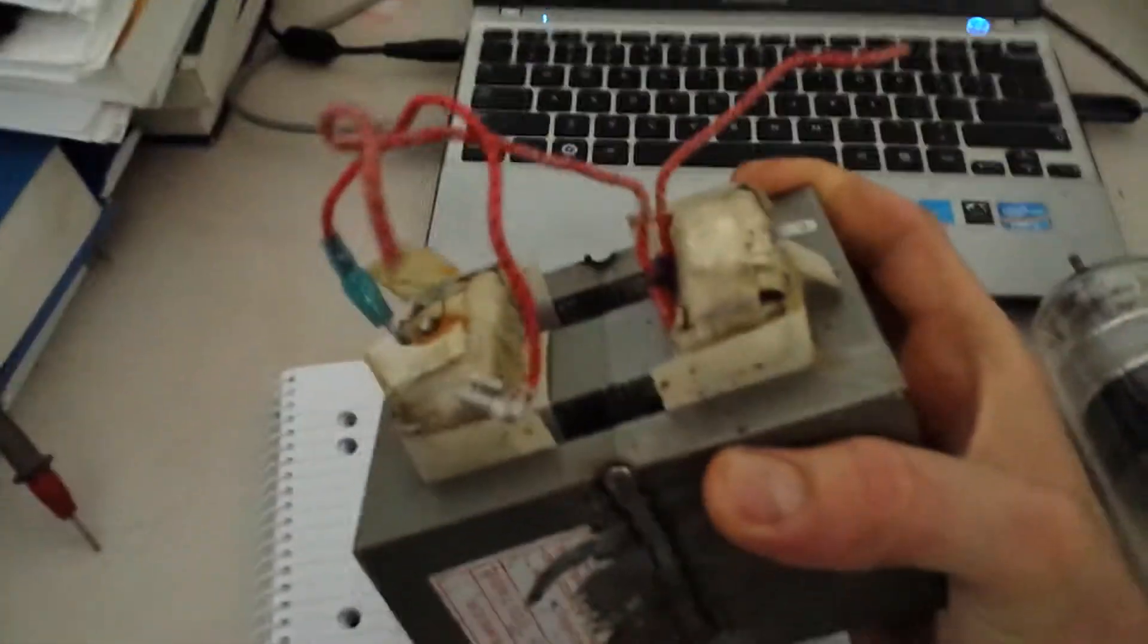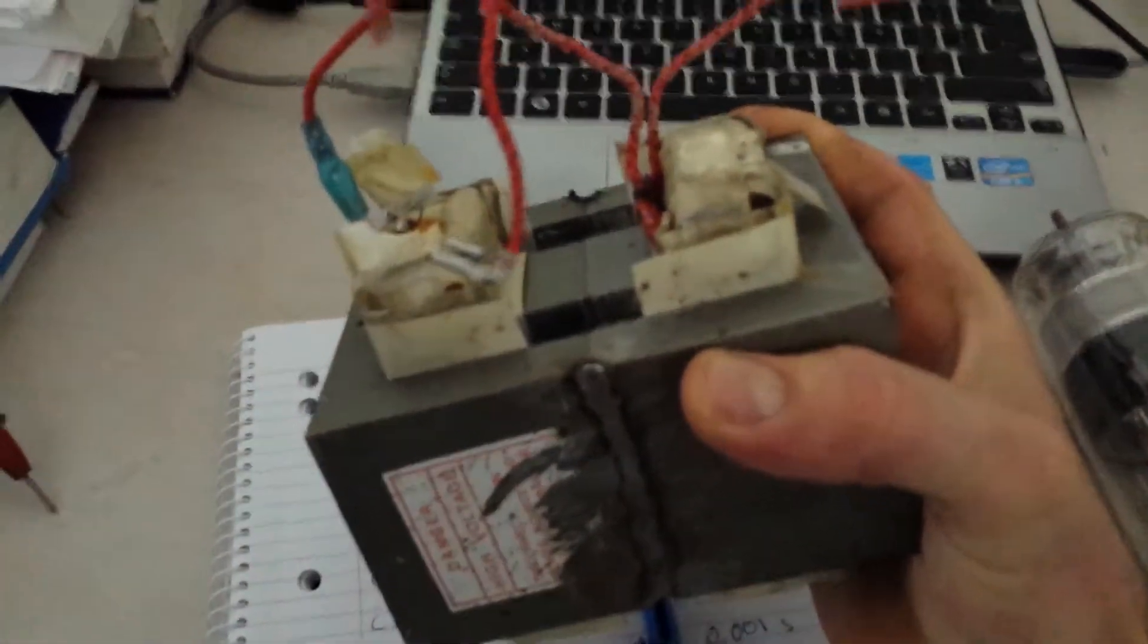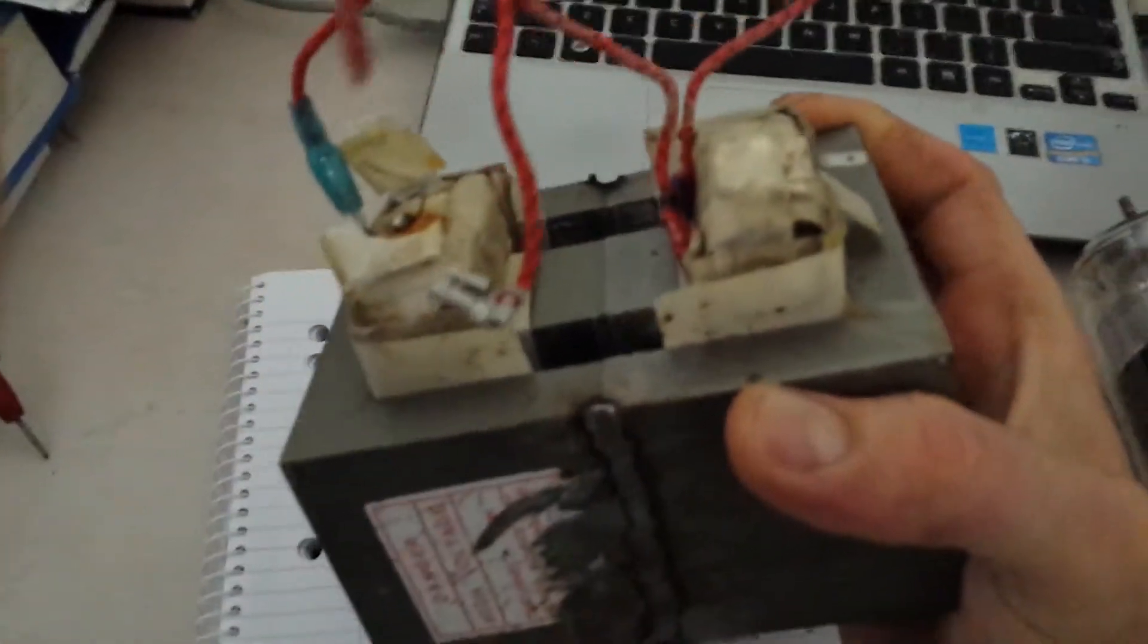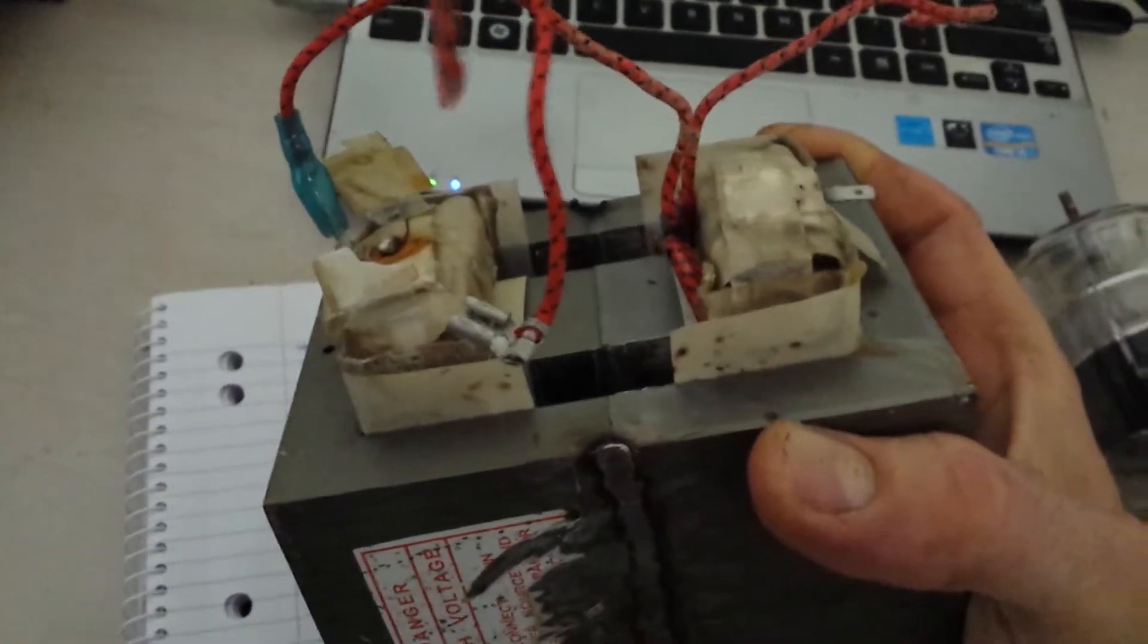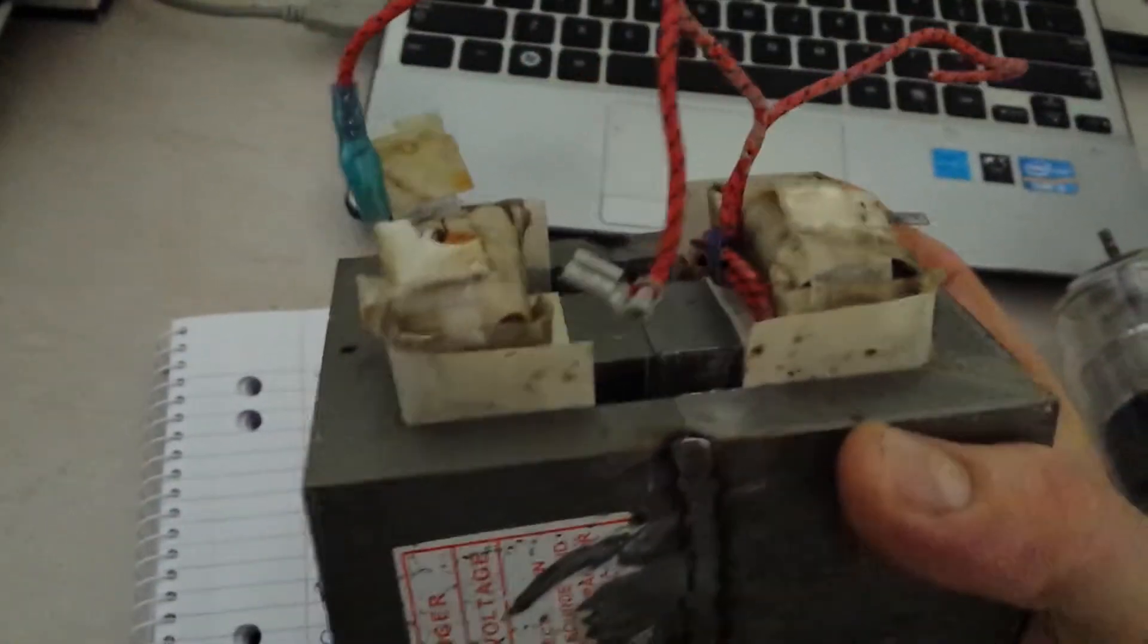And this is my charging reactor. It's two microwave oven transformers that are being welded together with the secondaries. And that will, with about 4,000 volts in, will only allow me to draw with a short circuit about 1,500 watt.